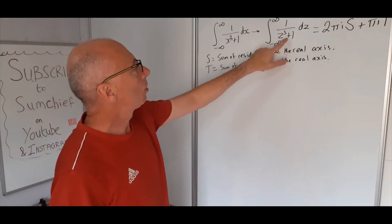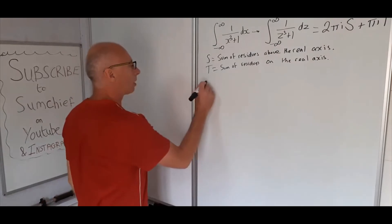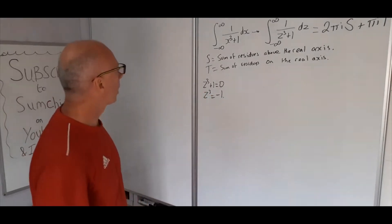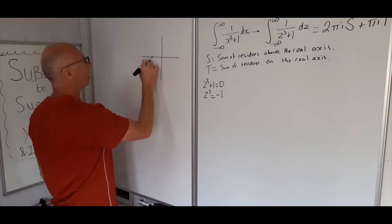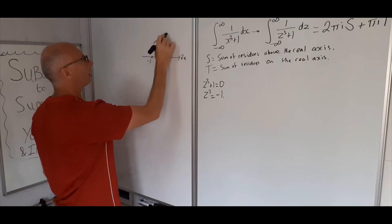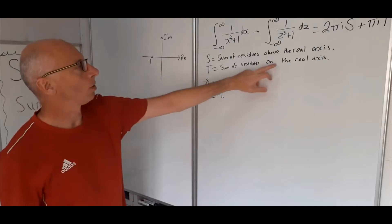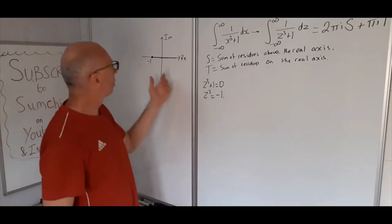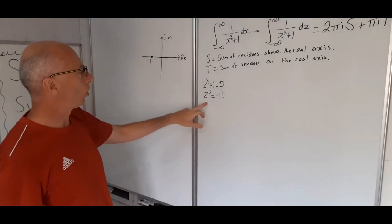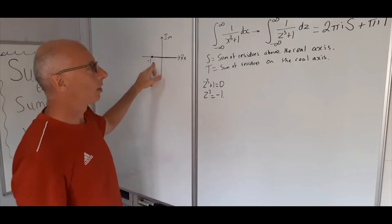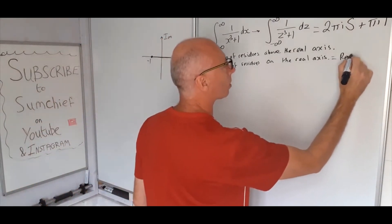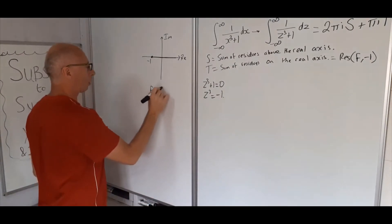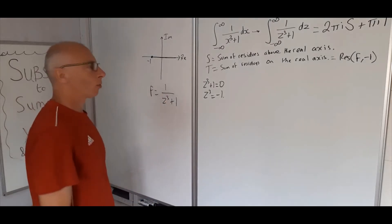For the poles of z cubed plus 1, we need to solve z cubed plus 1 equals 0, giving z cubed equals minus 1. Drawing this on the complex plane, minus 1 is on the real axis. We can see minus 1 is a solution — that's our first pole, and it's a pole of order 1. This will give us our value for t, so t involves the residue of f at minus 1, where f of z equals 1 over z cubed plus 1.